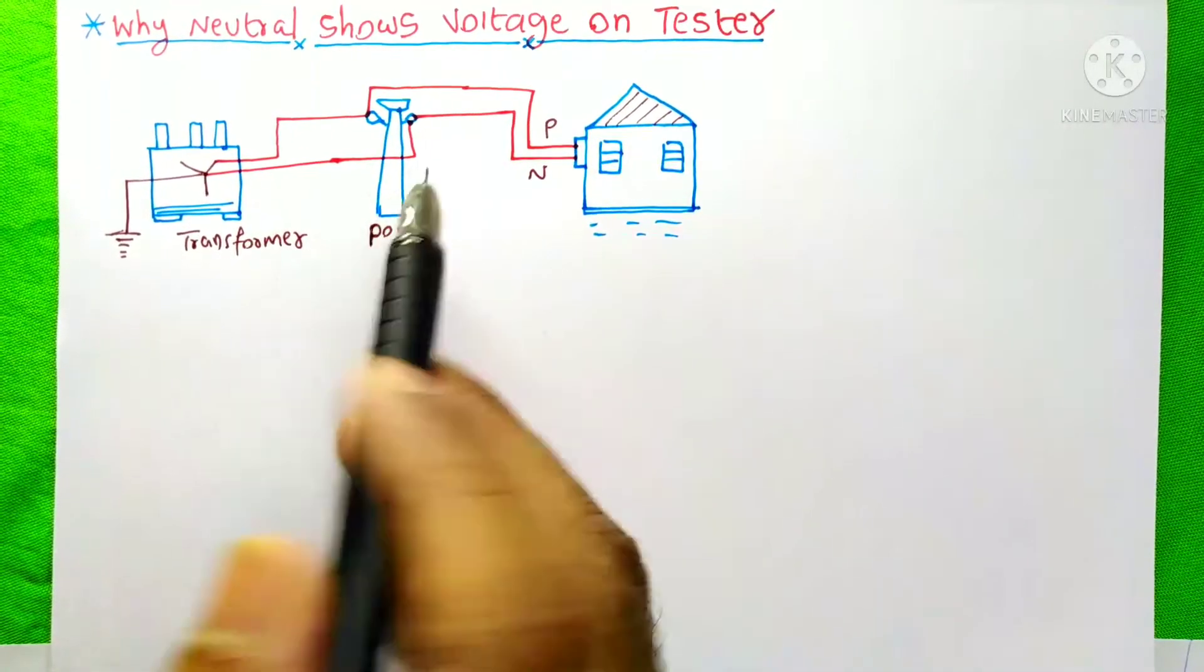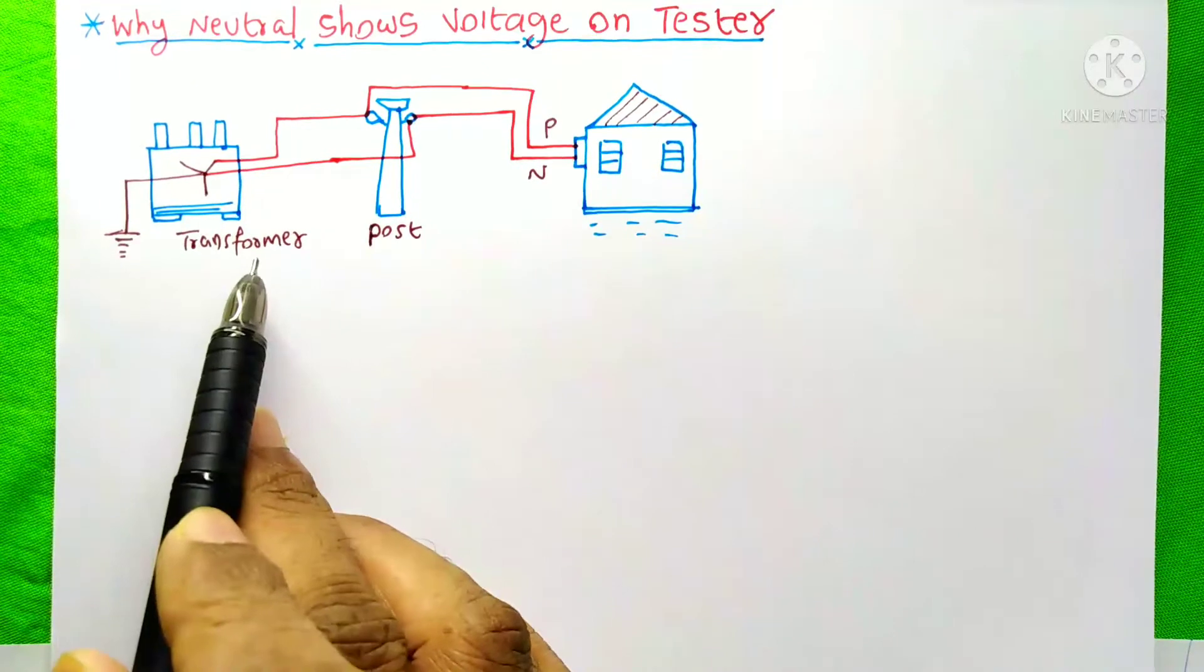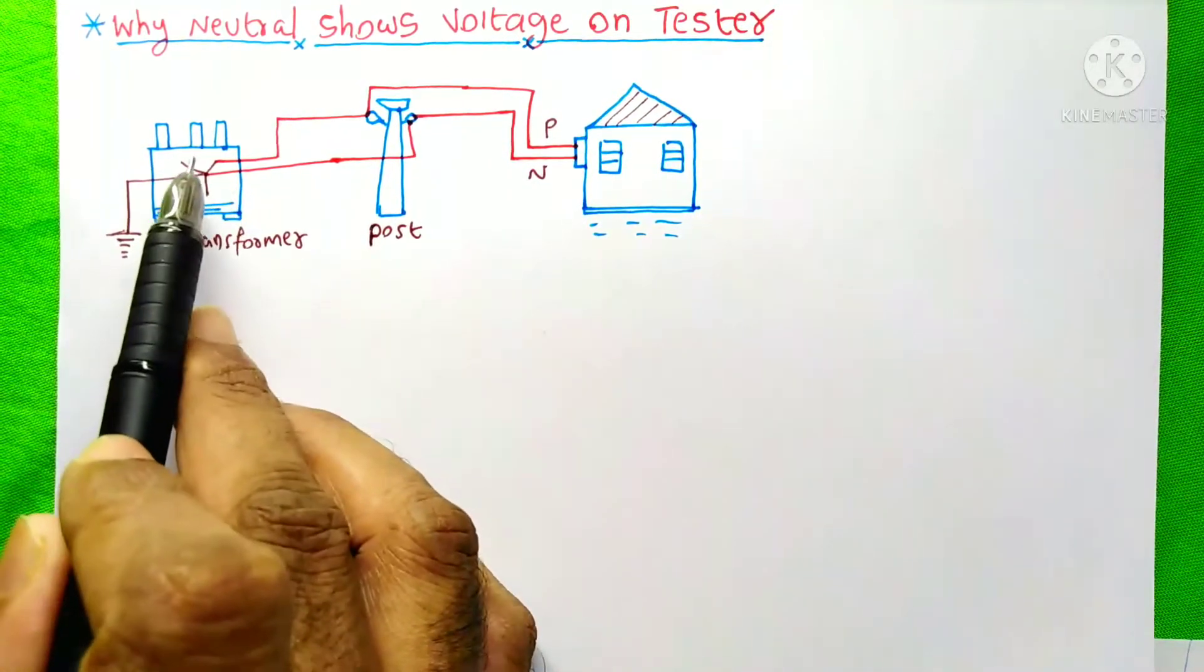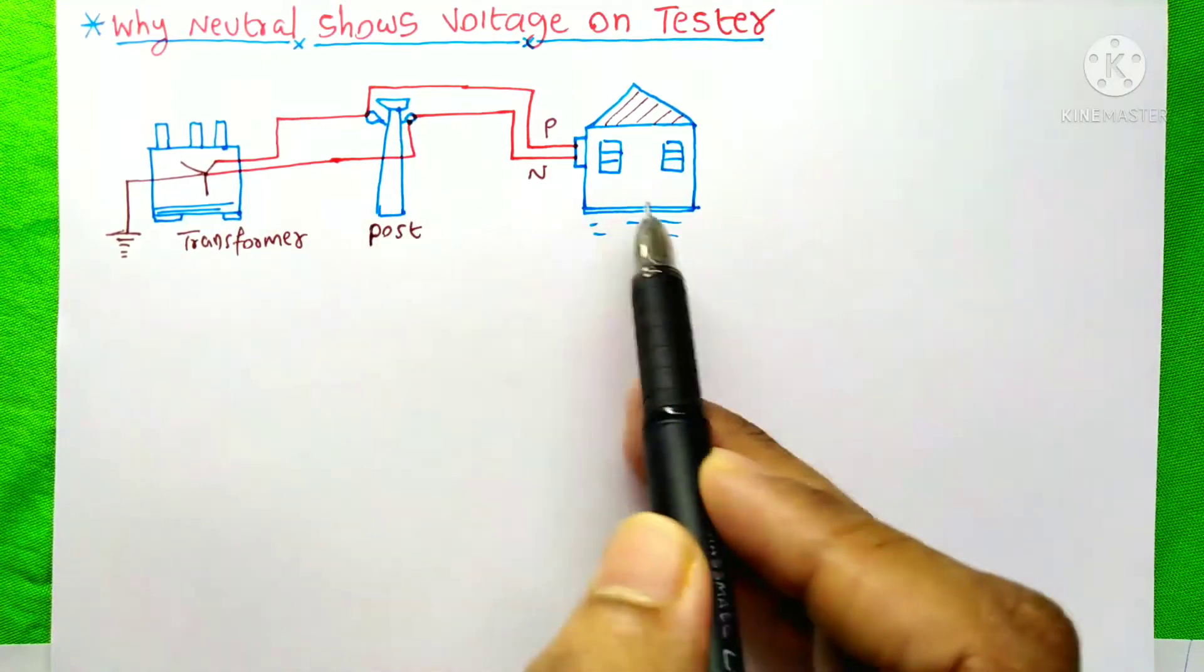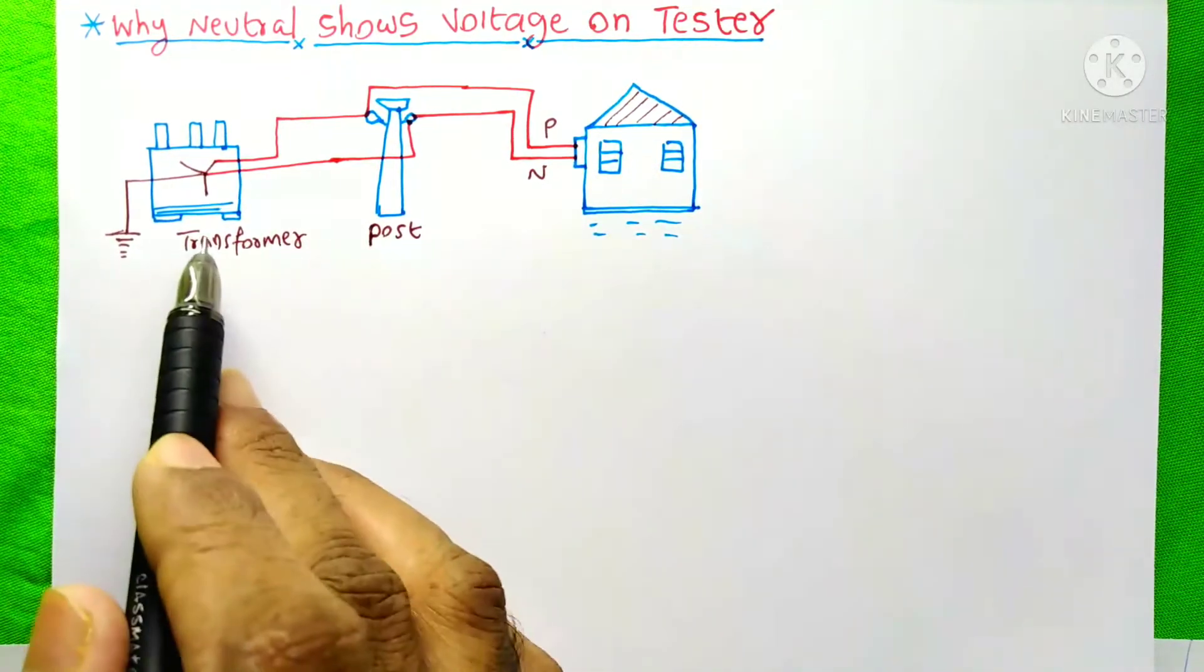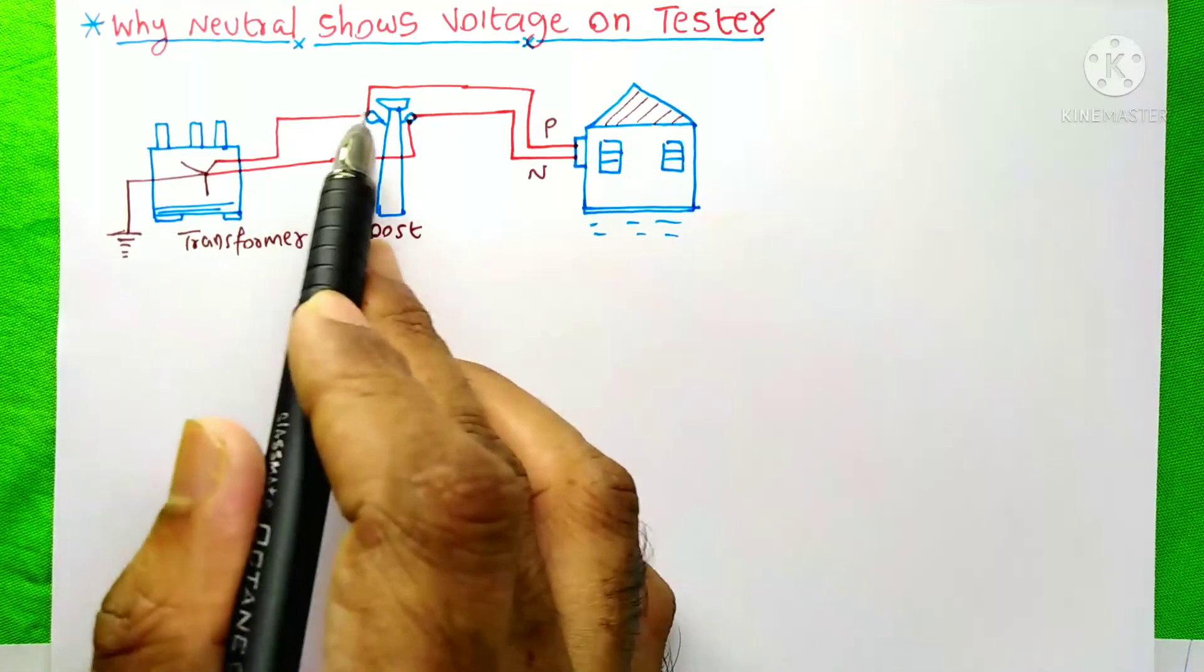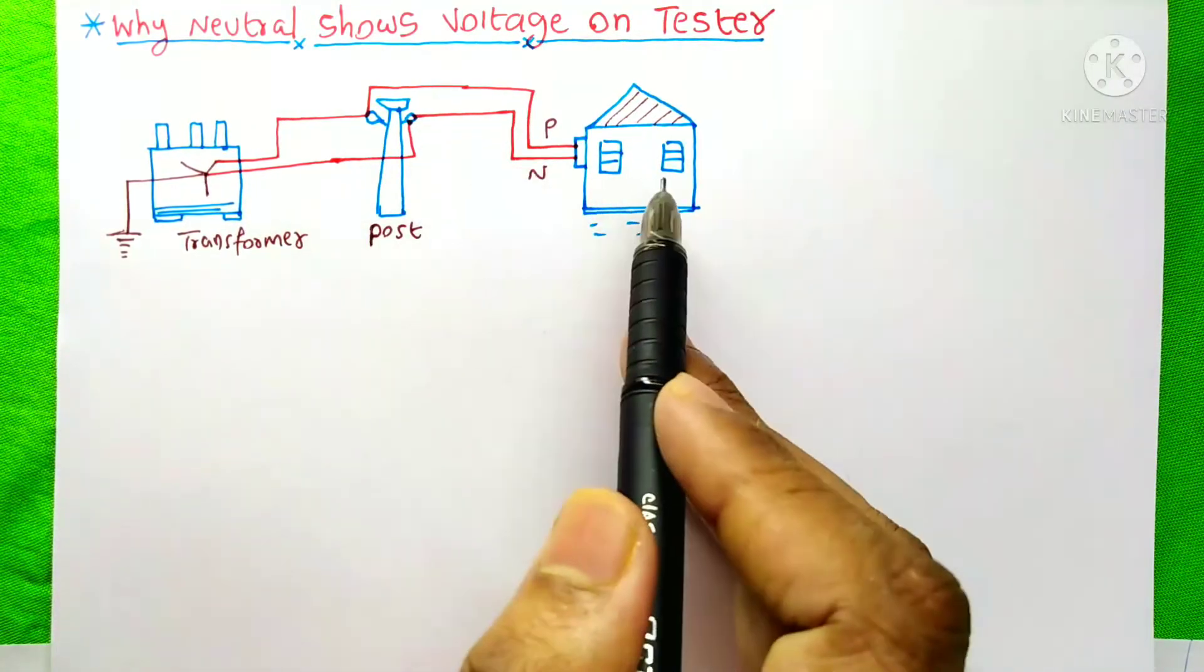In this diagram, I just showed a transformer. It is a distribution transformer. The secondary side is a star connector and here is an electrical post and it is a home. From this transformer, the single-phase supply is connected to this post and then to this home.